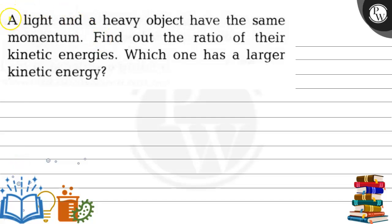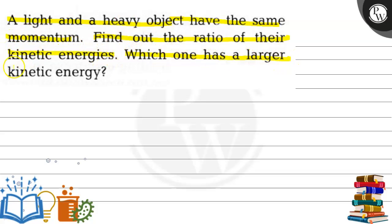Hello. Today's question is: a light and a heavy object have the same momentum — find the ratio of their kinetic energies. Which one has a larger kinetic energy? So let's solve it.